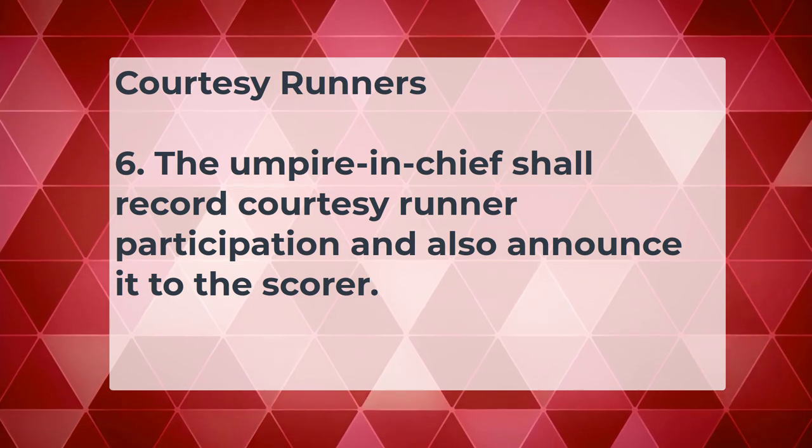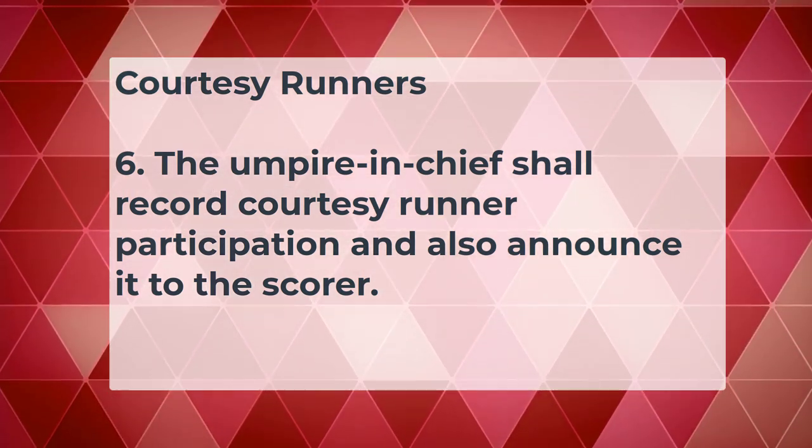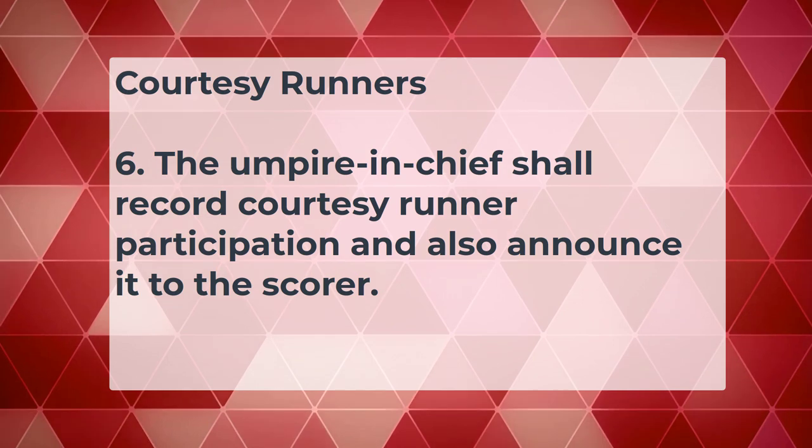Rule six: the umpire in chief shall record courtesy runner participation and also announce it to the scorer. When a courtesy runner enters the game we must let the other team know. If a coach tries to put a courtesy runner in without telling us, that would be an unannounced substitution, not a courtesy runner. It's very important that the use of a courtesy runner is clearly communicated between the coaches and the umpires.